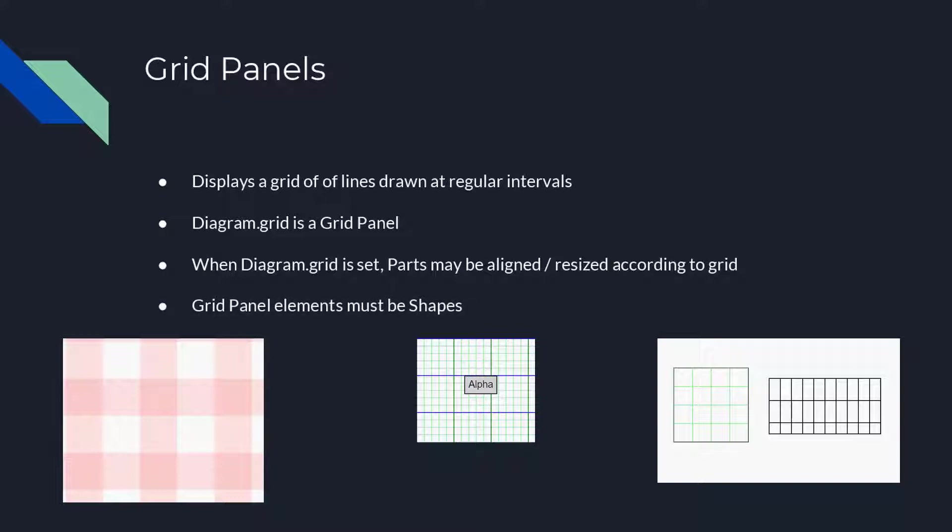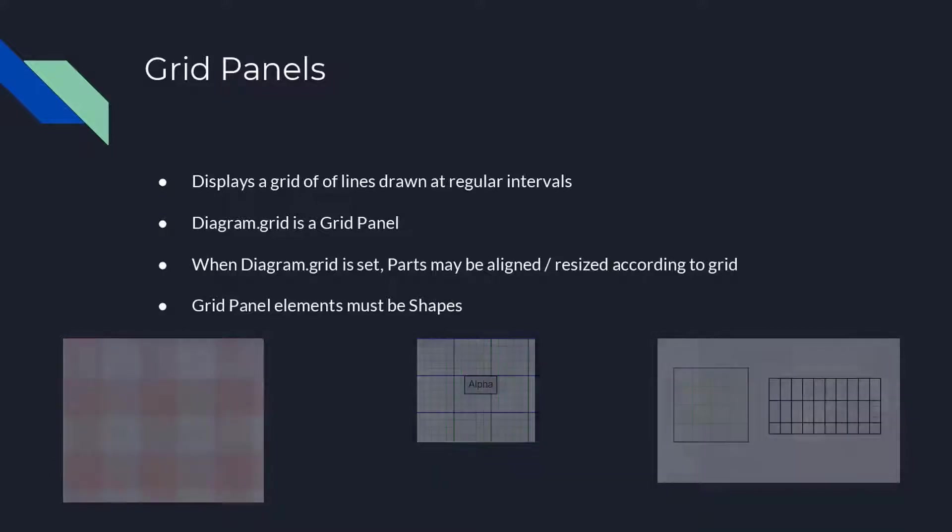Unlike other kinds of panels, grid panel elements must be shapes. These shapes are solely used to control how the grid lines or grid bars are drawn.